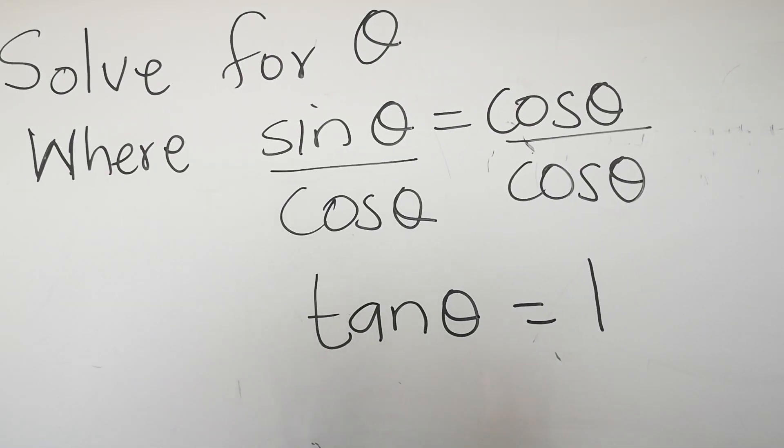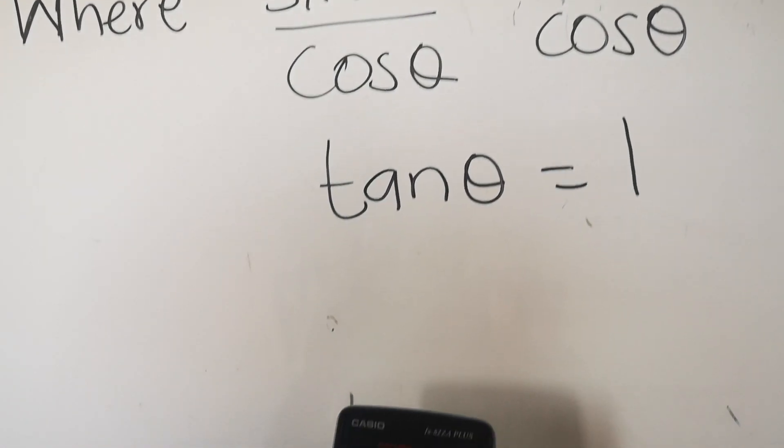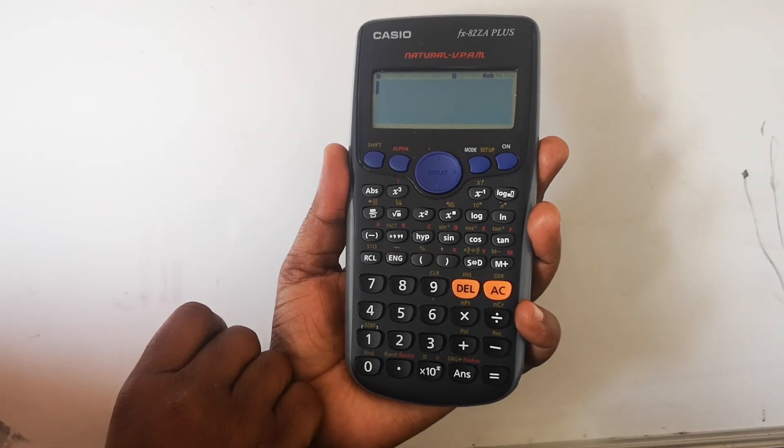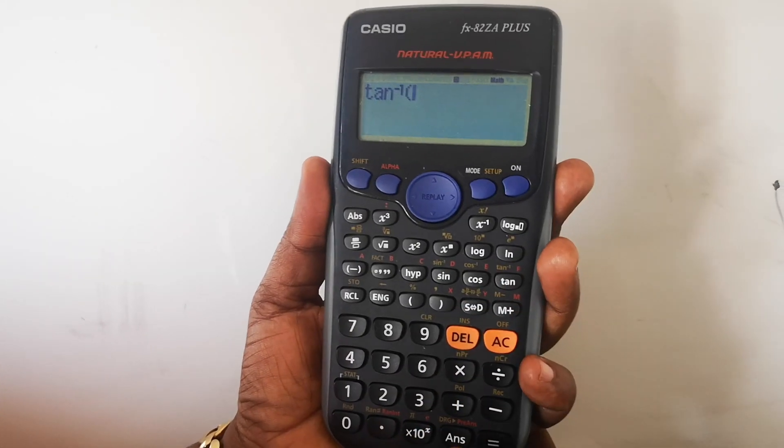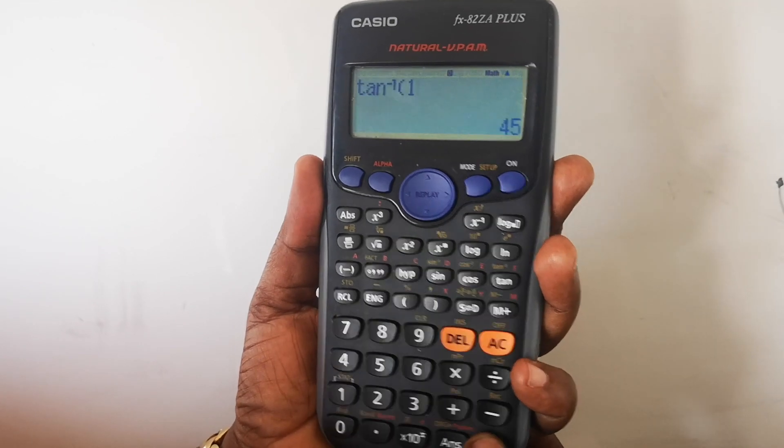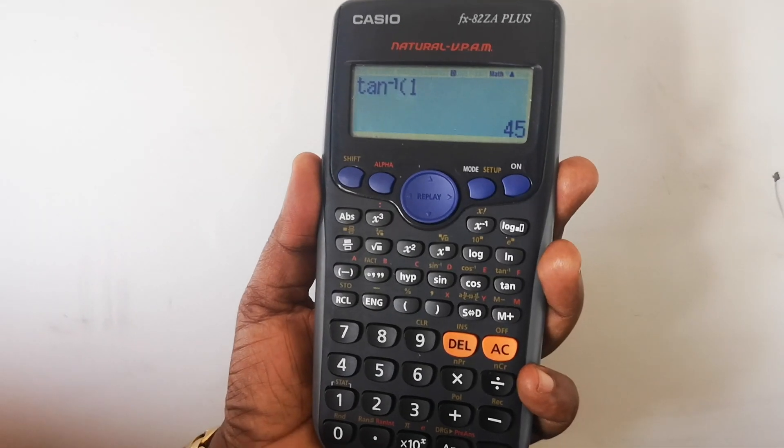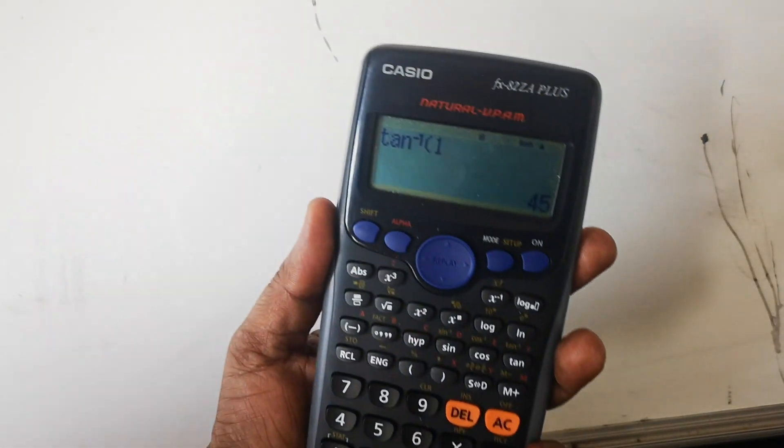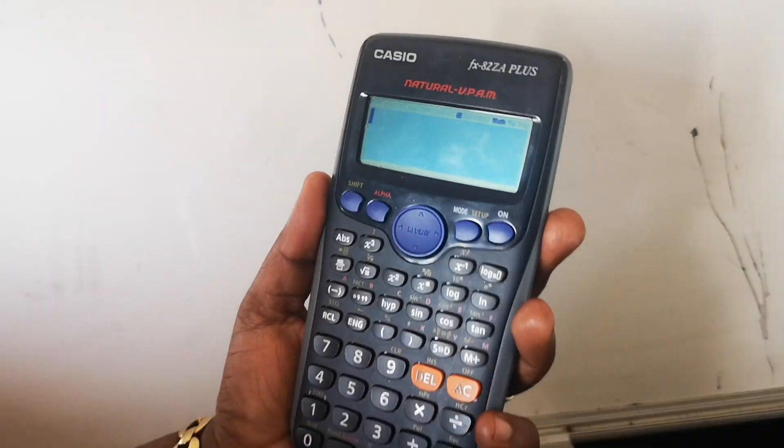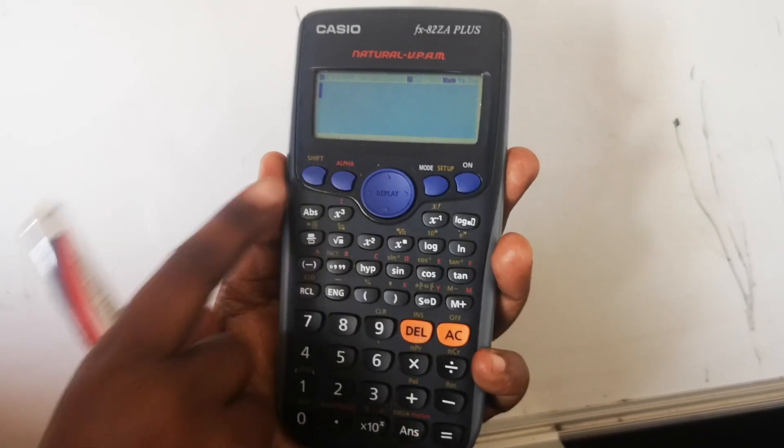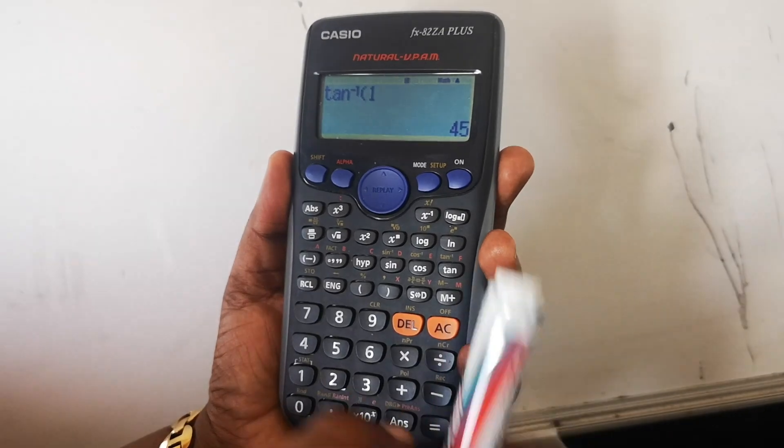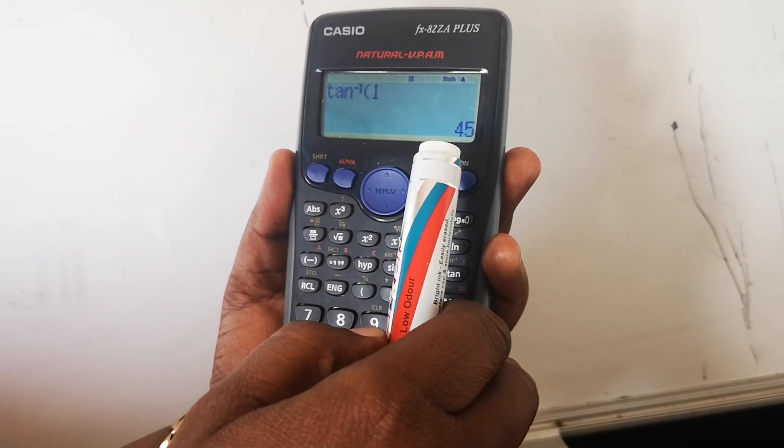We have our calculators. The equation says tan θ equals one, so we're looking for the reference angle. We're gonna go shift and then tan inverse, one, and then one, then equal sign. Then that angle that you get is a reference angle, so the angle is 45. So you're gonna go shift, tan inverse one, equals, then our reference angle is 45 degrees.